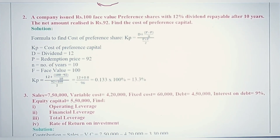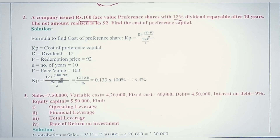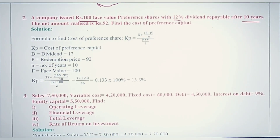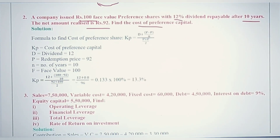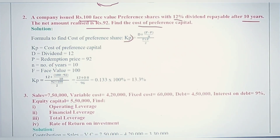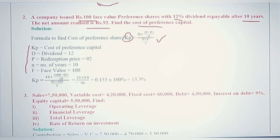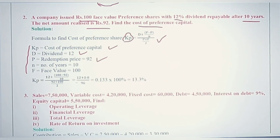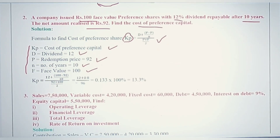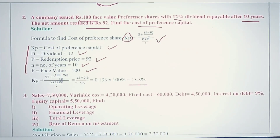Numerical 2: A company issued preference shares with a face value of ₹10,000, paying 12% dividend, redeemable after 10 years, with net proceeds of ₹92. Find the cost of preference capital (KP). The formula for KP looks a bit complex but must be learned. D (dividend) is 12%; redemption price is ₹92 (issued at a discount); number of years is 10; face value is ₹100. Putting all figures in the formula and multiplying by 100%, you get KP = 13.3%.